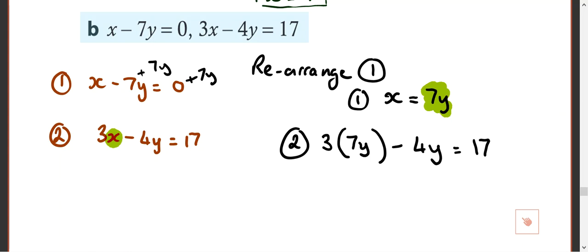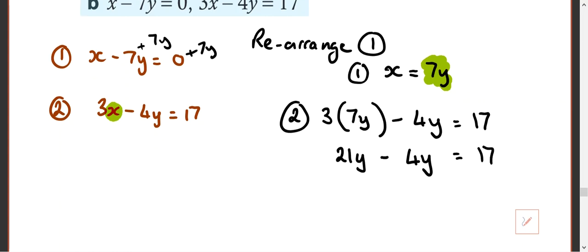Ready now? 21y minus 4y equals 17. We'll end up being nice and easy. 21y minus 4y is 17y equals 17.